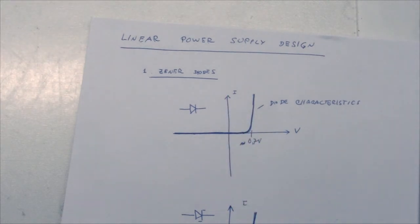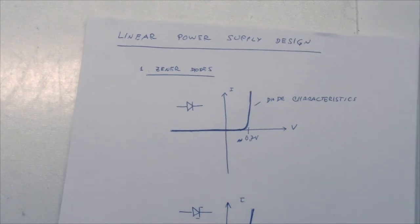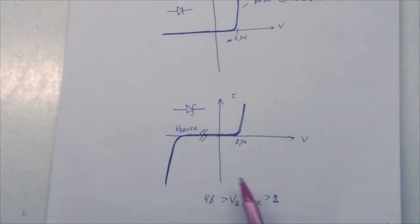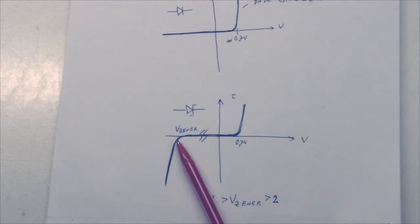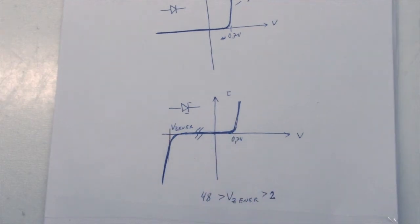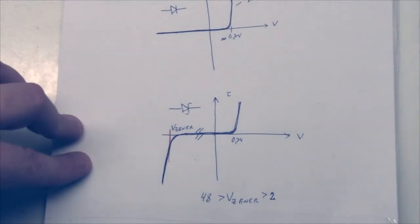However, there is a better component more suited for this, and that is the Zener diode. The Zener diode has the normal diode knee here, but it also has another knee at the negative voltage. You can get Zener diodes from about 2 volts and upwards. So based on the Zener diode as a voltage reference, we can do our first linear power supply.